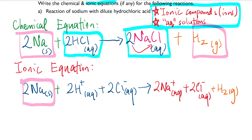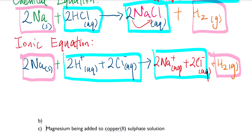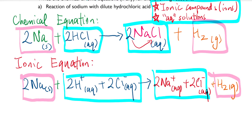After splitting the charges, you're supposed to look for terms you can cancel out on the left and right-hand sides. Look here — on the left-hand side you have 2 chloride ions, and on the right-hand side you also have 2 chloride ions.